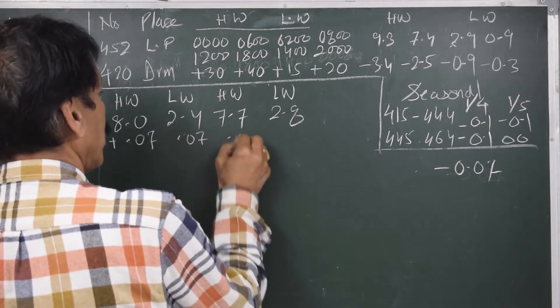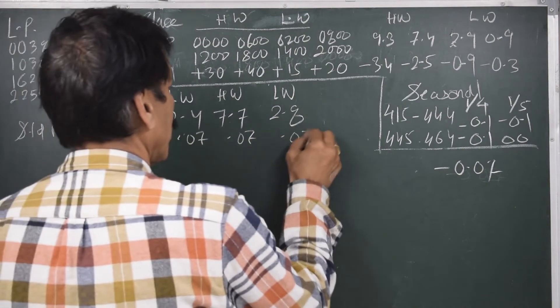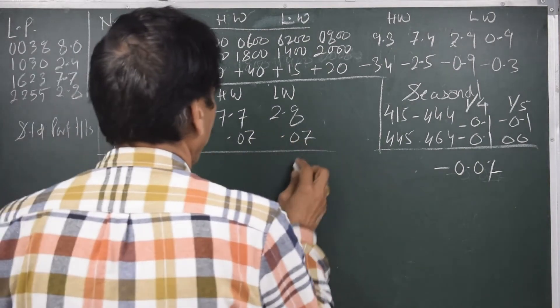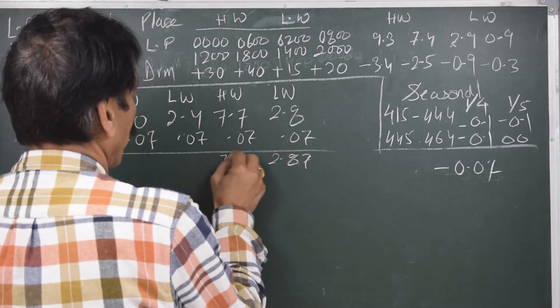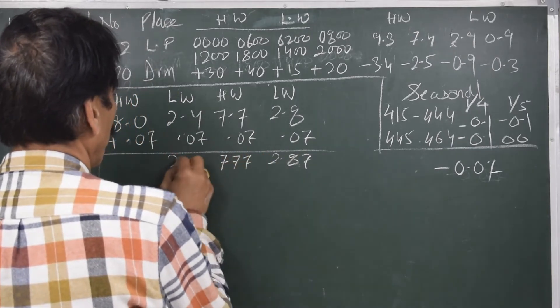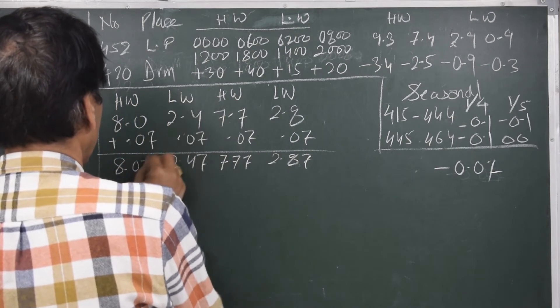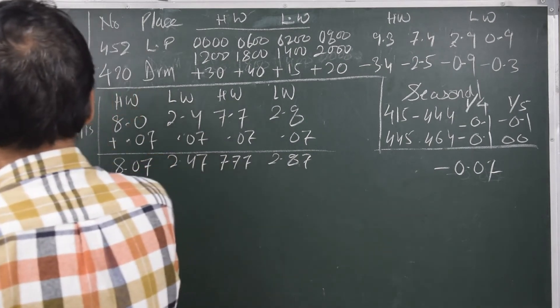So it will be plus 0.07, 0.07, 0.07, 0.07, 0.07. 2.87, 7.77, 2.47, 8.07. This is the basic heights.